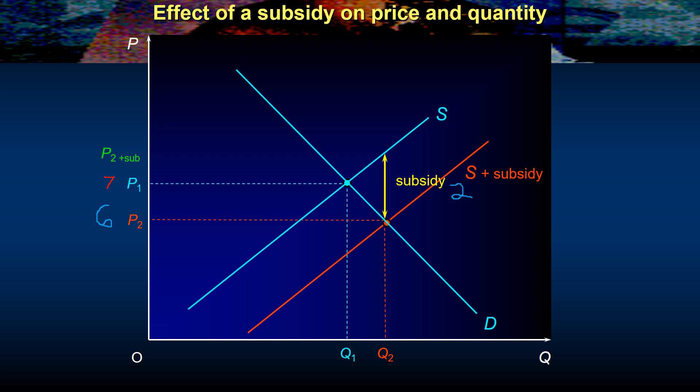So how much are the government spending is our first question. Well the government are spending two on all of the units that are being produced which is now Q2. So let's call that a hundred units. So the government are spending two on every unit and a hundred units are being bought and sold so the government spending on this would be two times one hundred. They'd be spending two hundred dollars or euros or millions of pounds on this particular subsidy and the area that would represent that would be this area here.